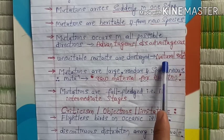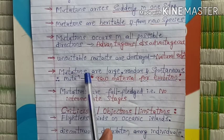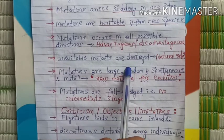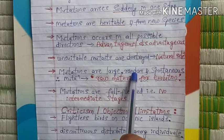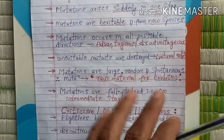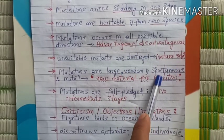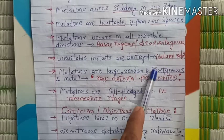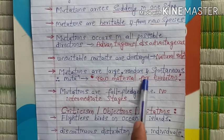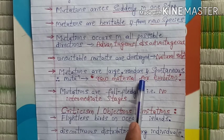Another important postulate is that mutations are large, random, and spontaneous — spontaneous means they occur suddenly. You have to remember these three important words: large, random, and spontaneous. Therefore, mutations are called the raw material for evolution.